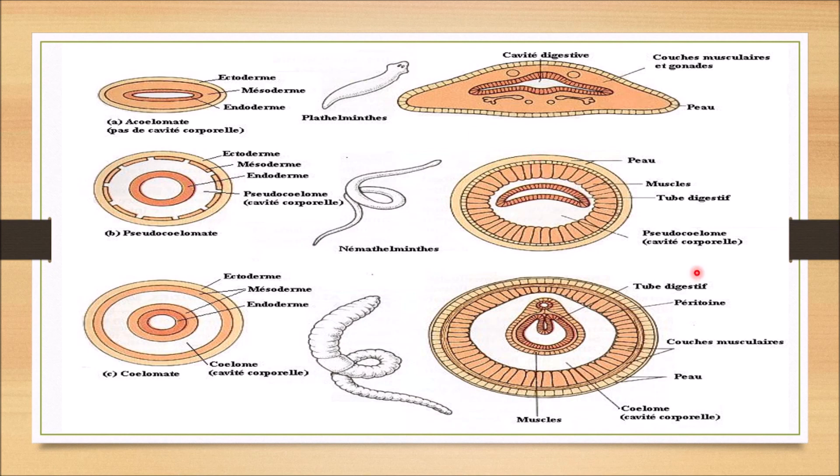For the coelomate: there is ectoderm, mesoderm, and endoderm, and the cavity between the mesoderm layers forms the true coelom.